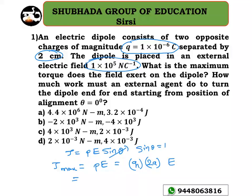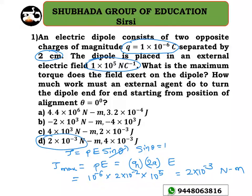Substituting the values: the charge is 10 to the power of minus 6 Coulomb, the distance is 2 cm, that is 2 into 10 to the power of minus 2, and the electric field is 10 to the power of 5. That gives 5 minus 1 minus 3, which is 2 into 10 to the power of minus 3 Newton meter. This corresponds to option D, so option D is the right answer.